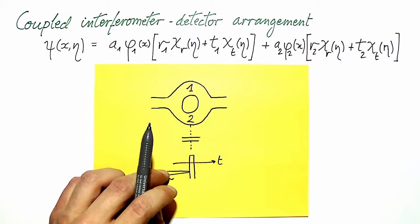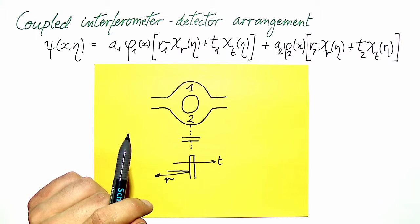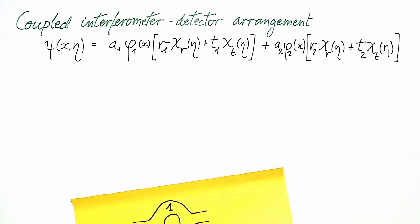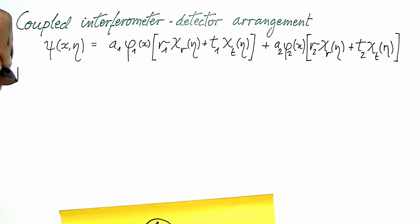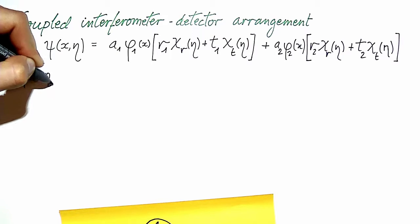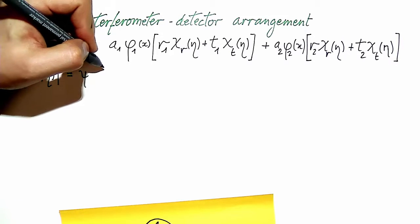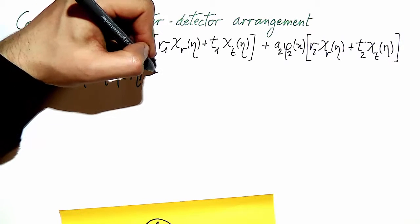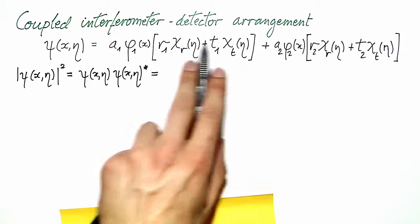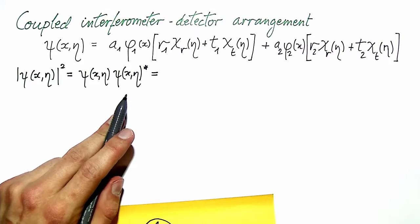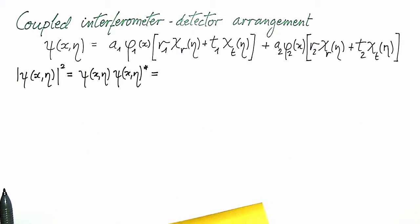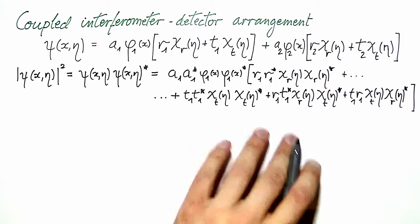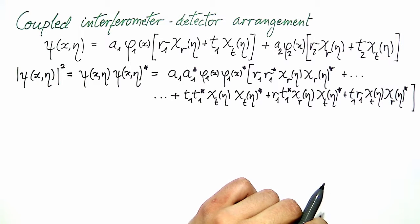In order to study the influence of one subsystem on the other, we are going to look at the reduced probability density for either system. First, I am going to write down the probability density for the whole system. It is obtained by multiplying out all the terms, and I am going to write only one of them, which will be one fourth of the whole expression. Here is the first summand of the probability density for the whole system.